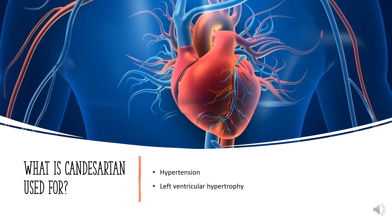What is Candesartan used for? It may be used as a first-line agent to treat uncomplicated hypertension, isolated systolic hypertension, and left ventricular hypertrophy. It may also be used as a first-line agent to delay progression of diabetic nephropathy. Candesartan may be used as a second-line agent in the treatment of congestive heart failure, systolic dysfunction, myocardial infarction, and coronary artery disease in those intolerant of ACE inhibitors.